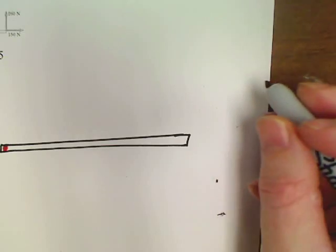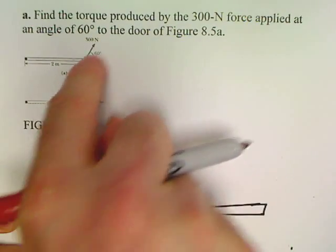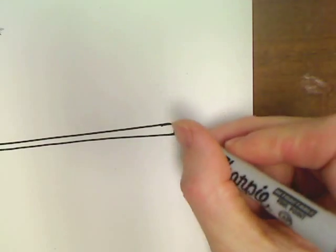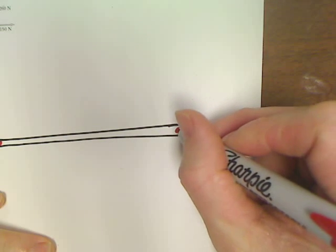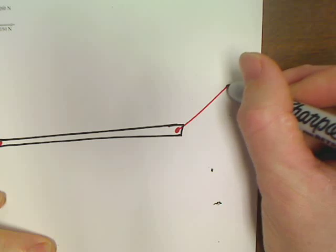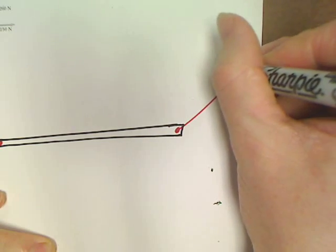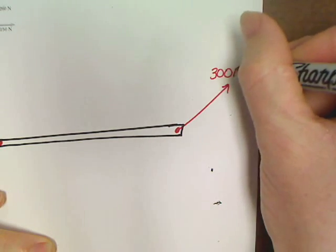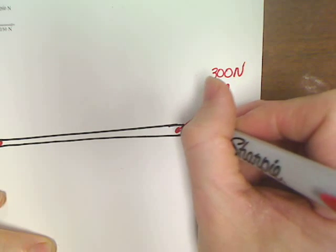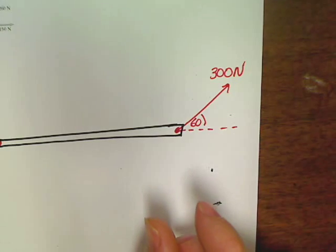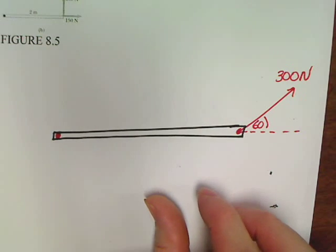And in this problem, it says, if we go back, there's a 300 Newton force at an angle of 60 degrees. So I'm going to put me a dot there to represent a force. Someone is exerting a force of 300 Newtons. And they're exerting that force at an angle of 60 degrees over there relative to the beam.